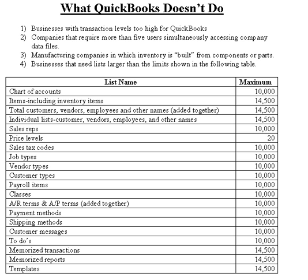And number four: businesses that need lists larger than the limits shown on this table. Most often the list that offers the limitations is the third and fourth line of the table. Notice that the total customers, vendors, employees, and other names added together is 14,500 on the third line. If you entered 14,500 customers in your QuickBooks database, QuickBooks would handle this just fine. But if you tried to enter number 14,501, QuickBooks could not handle this. You may want to pause the video and go down the list to make sure your company does not exceed any of these maximums.